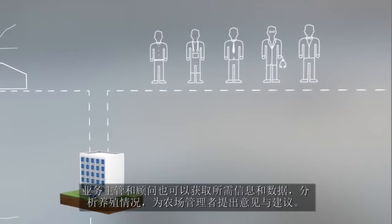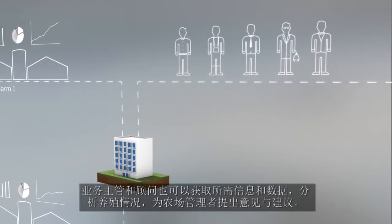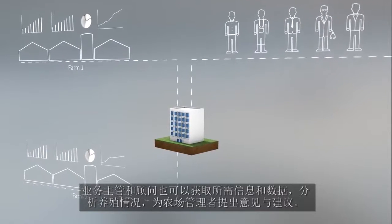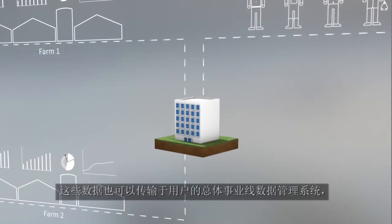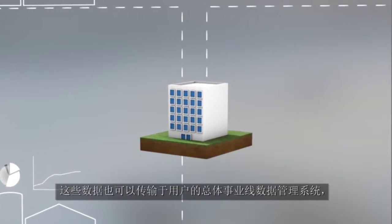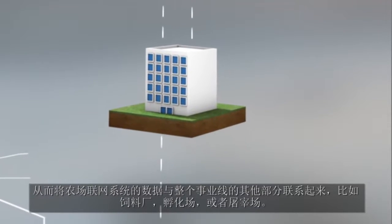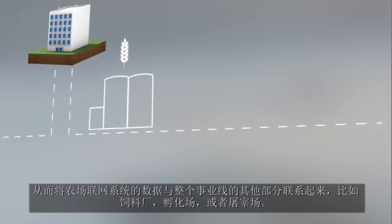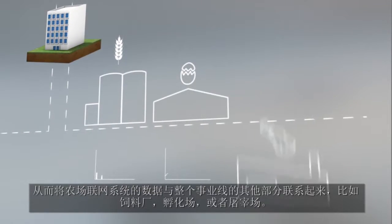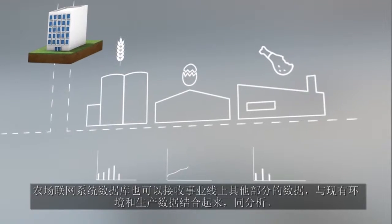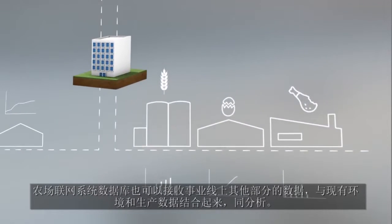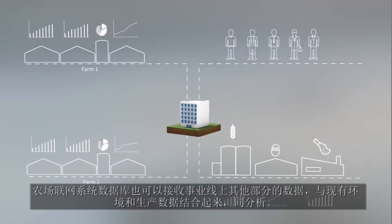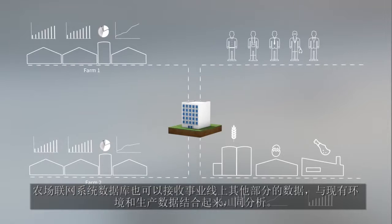Business supervisors and consultants can also get the data they need to analyze production and advise farm managers. Data can be sent to the owner's business data management system, where Farm Online data is integrated into data from other parts of production, for example from a feed mill, a hatchery or an abattoir. The Farm Online database is also able to receive data from these parts of production and use it for a combined analysis with existing climate and production data.